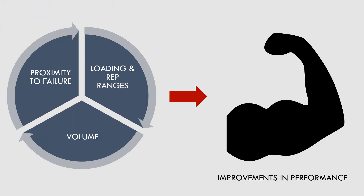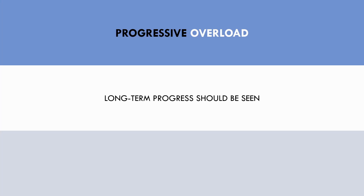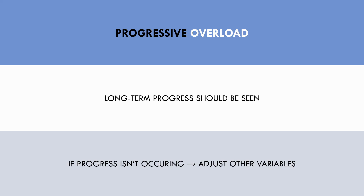Our performance can be used as a proxy for muscle growth. Trainees shouldn't expect week-to-week progression every single week unless they are new to training, but month-to-month and year-to-year progression should be seen. If performance progress isn't being made, then you may have to go back to the previous three variables and change something to make training more effective.